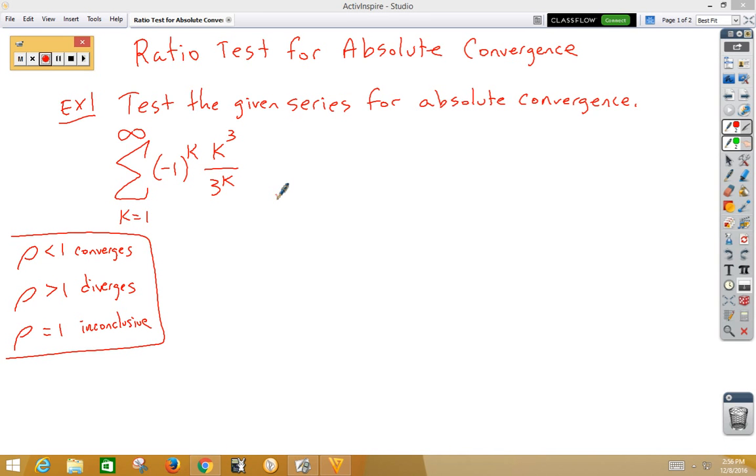In this video, we're doing the ratio test for absolute convergence, and let's do an example. Let's remember that when we do rho, if rho is less than 1, it converges, if rho is greater than 1, it diverges, if rho is equal to 1, it's inconclusive.